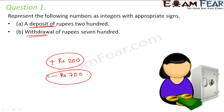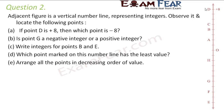Question number two: the adjacent figure is a vertical number line representing integers. It is a line just like a number line but vertical instead of horizontal. The origin is the center point. Above the origin we have positive integers and below we have negative integers, similar to how a horizontal number line has positives on the right and negatives on the left.